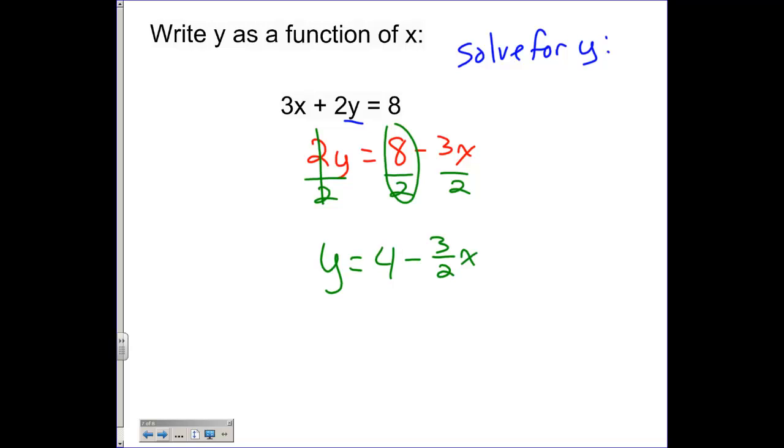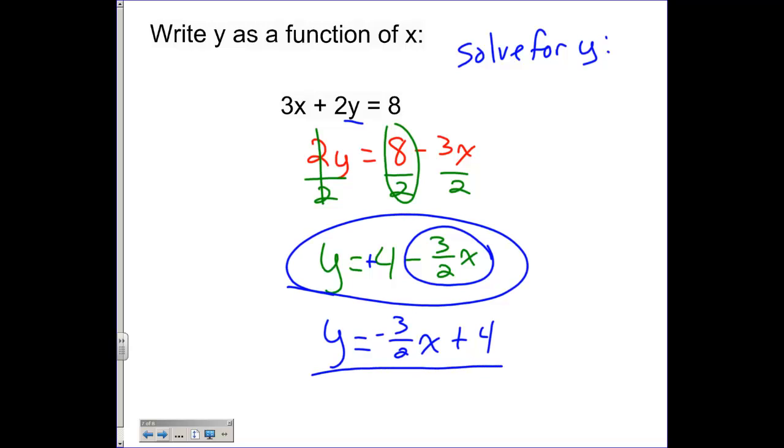Now, I could leave it like that, but in standard form, we like to have our variables up front. So I'm going to take that negative 3 over 2x and put it in front. And this was positive to begin with, so I have to connect that with a plus. So you could have left it like this, but it's better written like that.